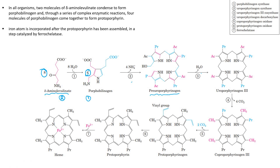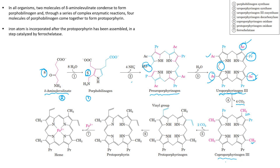Pre-uroporphobilinogen undergoes dehydration, releasing water molecules. This forms uroporphobilinogen 3, and this reaction is catalyzed by uroporphobilinogen 3 cosynthase. In this compound, the AC group represents the acetyl group and the PR group represents the propionyl group. Uroporphobilinogen 3 then undergoes decarboxylation, releasing four molecules of carbon dioxide from the four acetyl groups, converting acetyl groups to methyl groups, forming coproporphobilinogen 3.